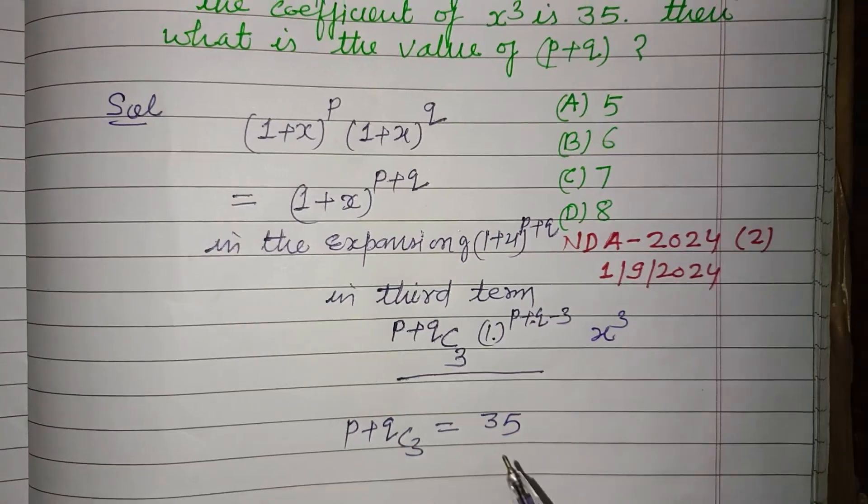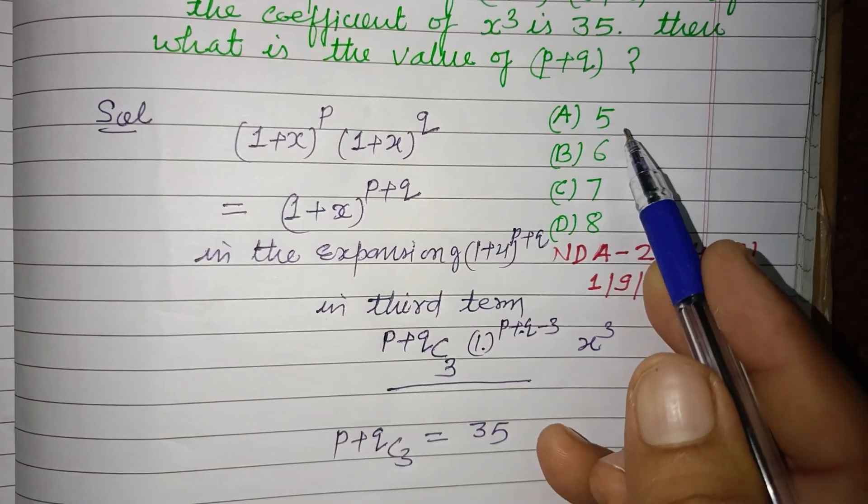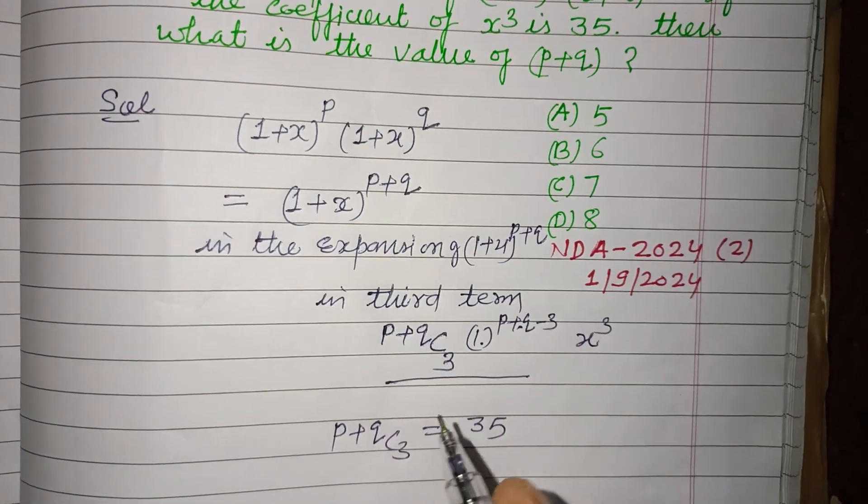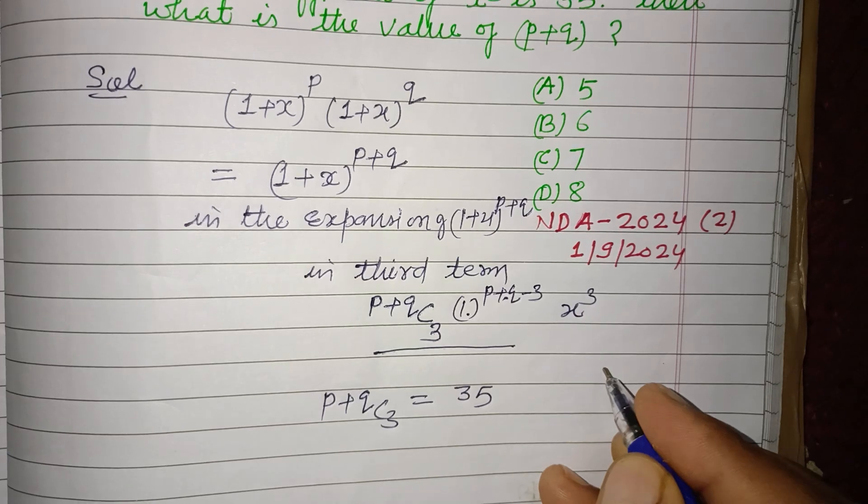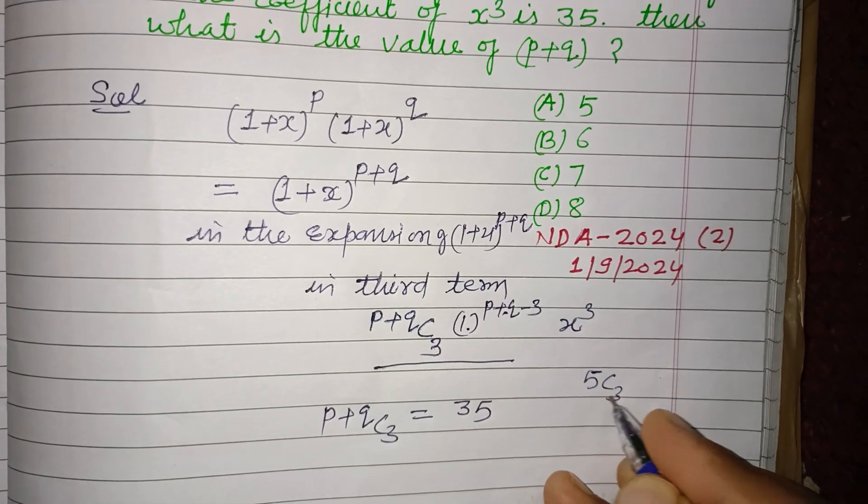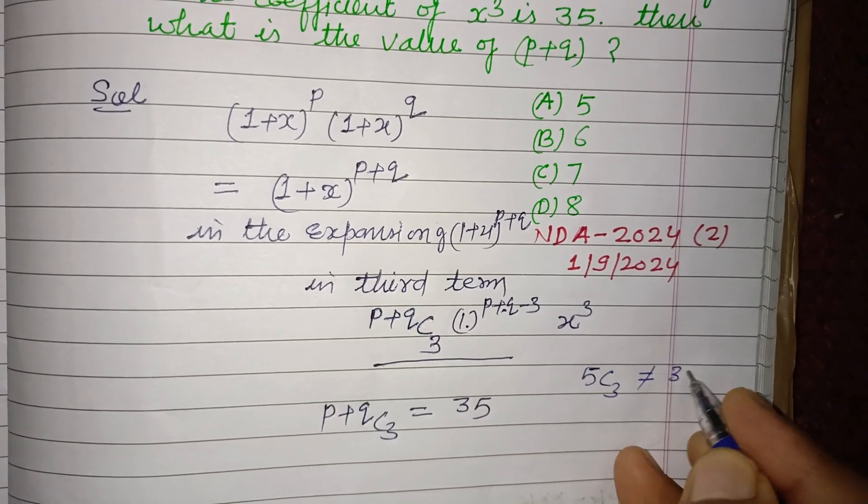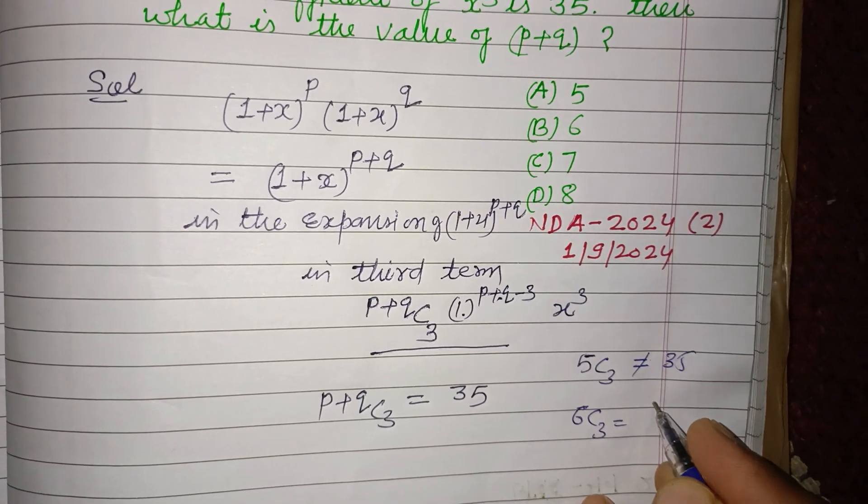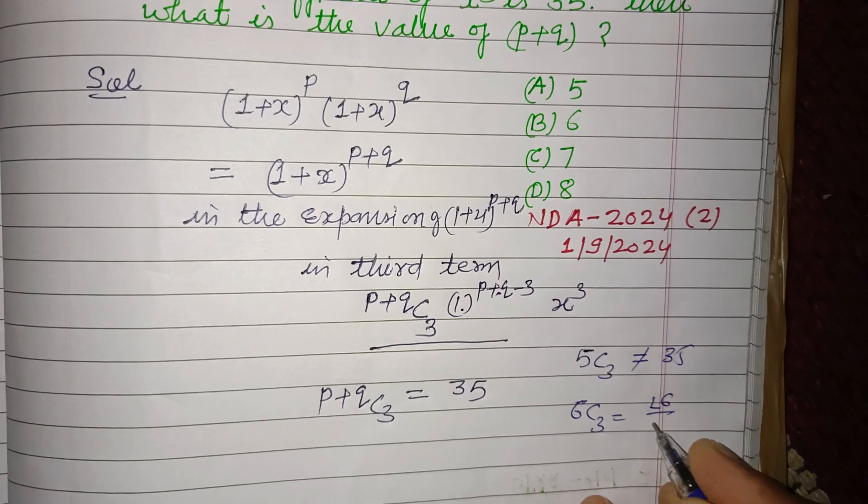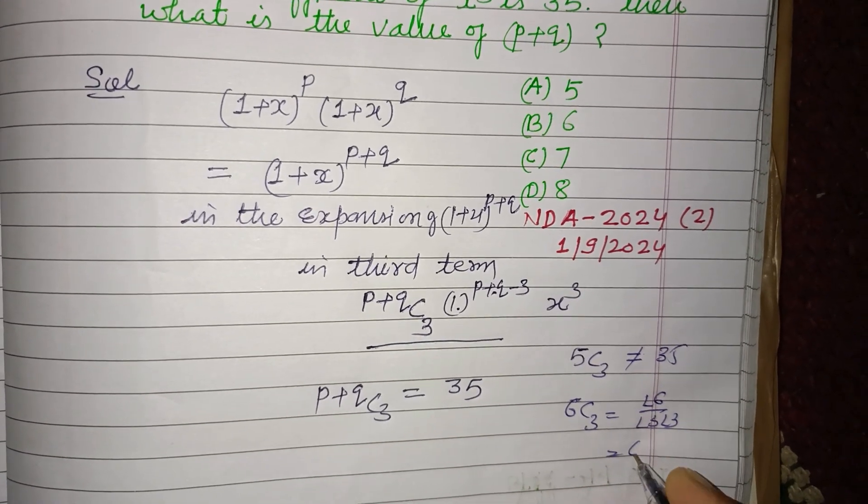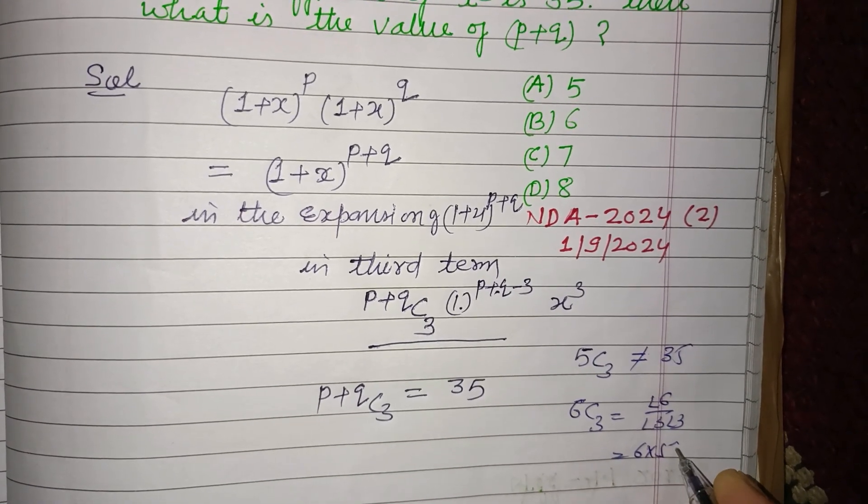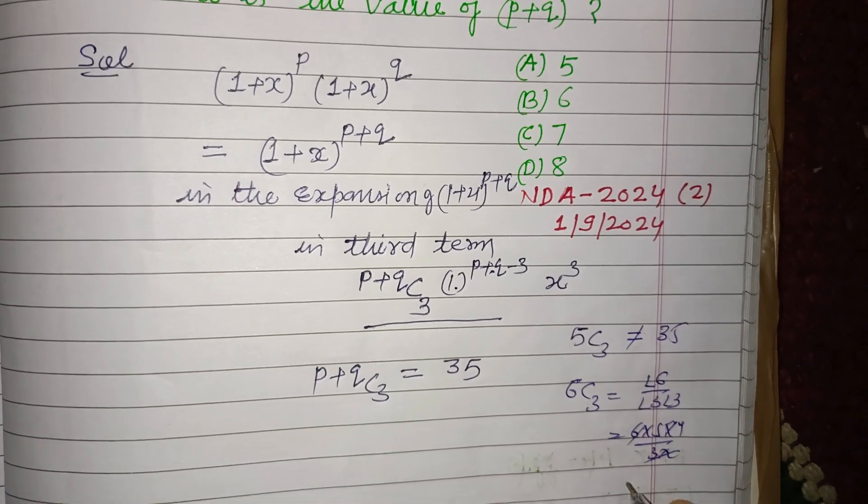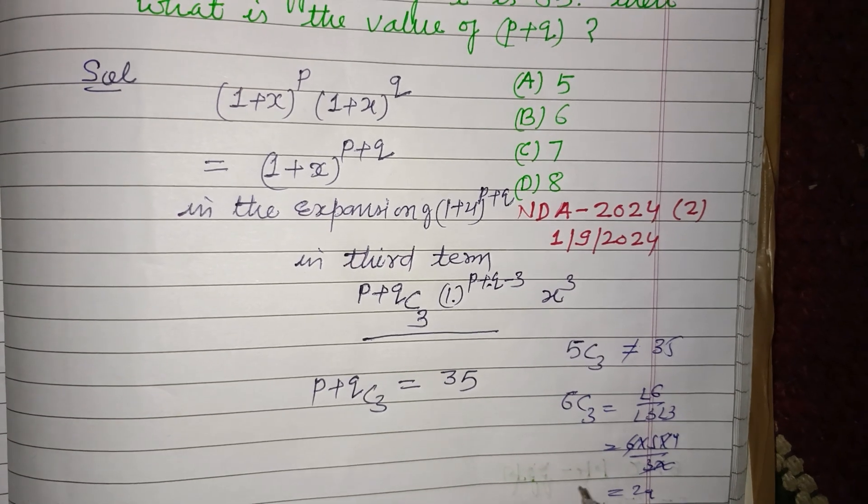Now we can check that the value of p+q is 5, 6, 7, or 8. So if we put 5C₃, this is not equal to 35. If we put 6C₃, it is 6 factorial over 3 factorial 3 factorial, so this is 6 times 5 times 4 over 3 times 2, which is 24, not equal to 35.